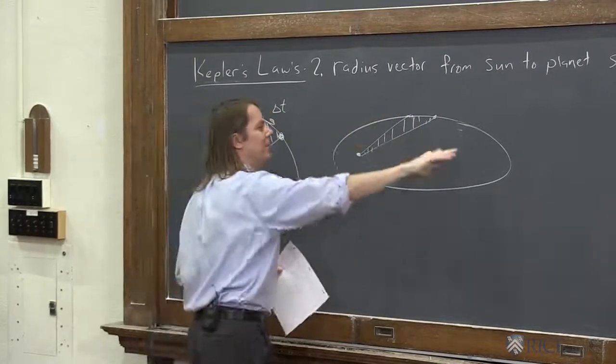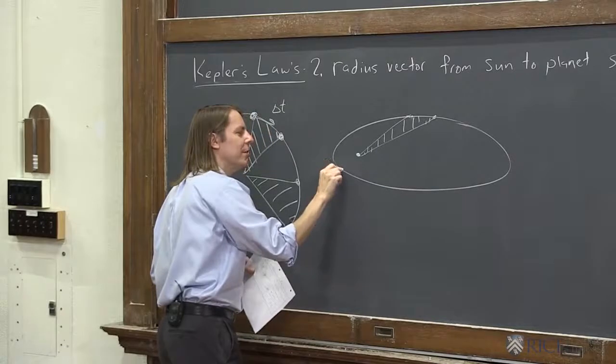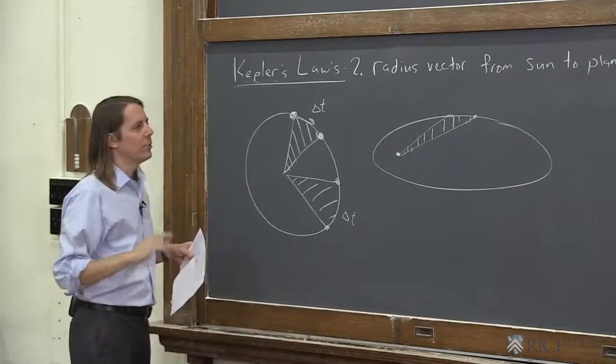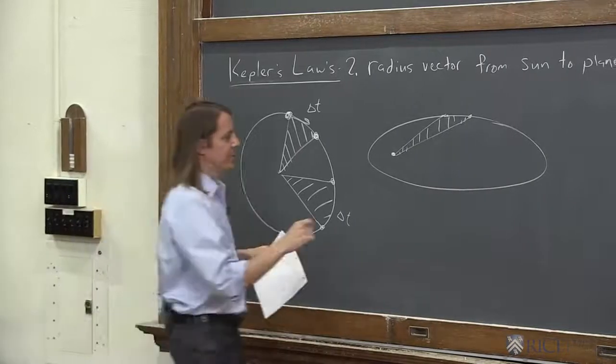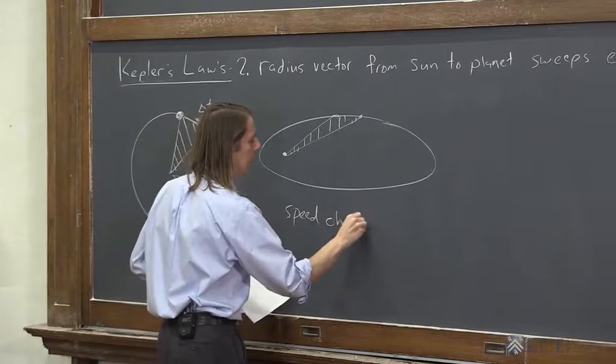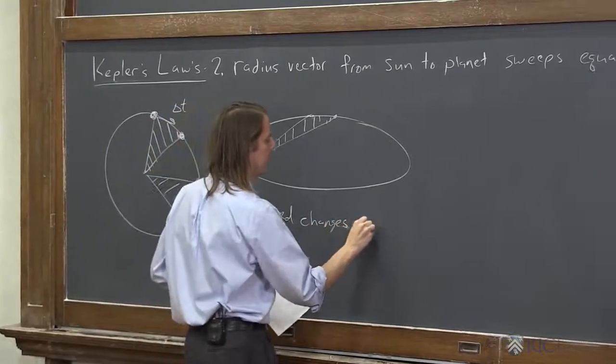So if you said it's going the same speed the whole time, it's just going to go a much smaller area here. So it doesn't quite work out. So what you have to have is that the speed changes around the ellipse.